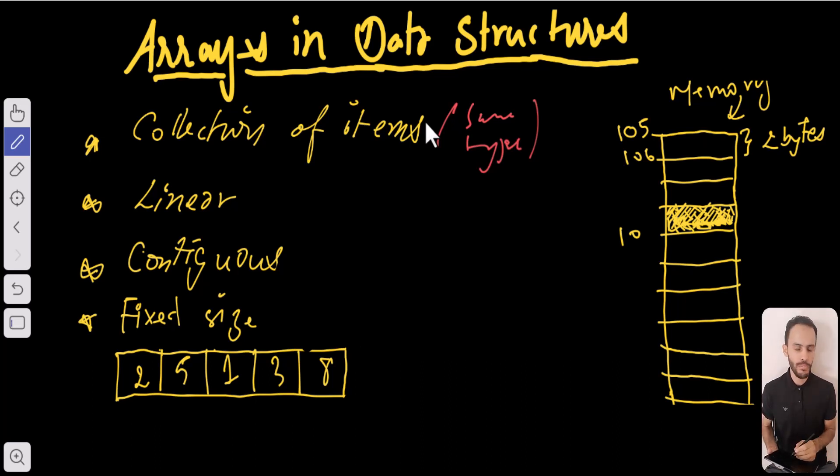We mean that the elements are represented in a sequential manner, one after the other. Like in the example here, we have elements that are represented one after the other.